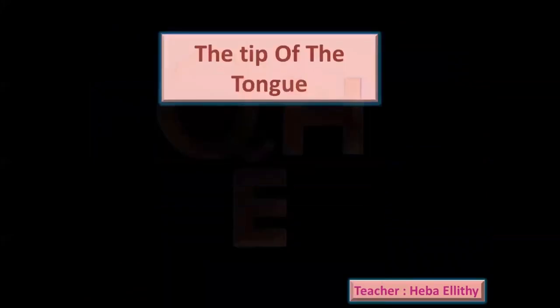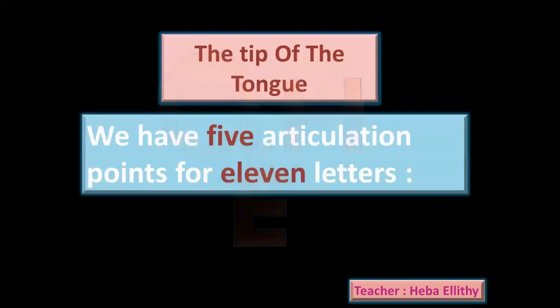How many letters do we have in the tip of the tongue, and how many articulation points? We have five articulation points for 11 letters. The tip of the tongue is very important — five articulation points for 11 letters. Arabic letters total 29, so it's quite a lot of letters coming from the tip of the tongue.